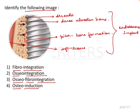Let's try to break down the words. Fibro meaning fibrous, integration meaning joining. This doesn't look very much like a fibrous joining because there is all alveolar bone here. So that is not a possible option.